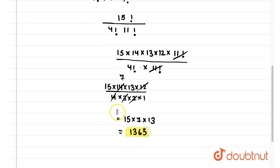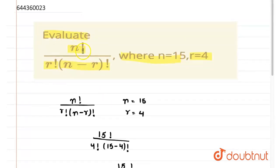1365 is the final answer when we will evaluate n factorial upon r factorial into n minus r factorial. Thank you.